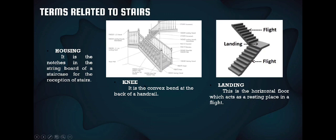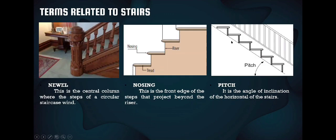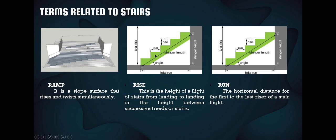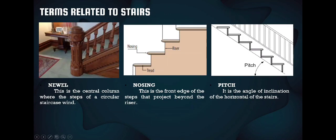The landing is the horizontal floor space which acts as a resting place in a flight. The newel is a central column where the steps of a circular staircase wind — the post at the start of a staircase where the beginning of the handrail is attached. The nosing is the front edge of the step that projects beyond the riser. The pitch is the angle of inclination from the horizontal of the stairs — the angle between the stair and the floor.